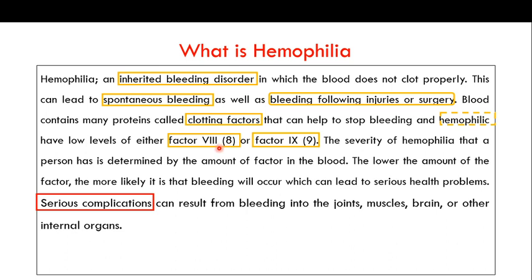Two important clotting factors with respect to hemophilia: Factor 8, which is responsible for causing hemophilia A, and Factor 9, which is responsible for causing hemophilia B. In hemophilic individuals there will be low levels of Factor 8 or Factor 9, or they will be totally missing. The severity of hemophilia is determined by the amount of factor in the blood — lower amounts mean bleeding is more likely, leading to serious health problems.